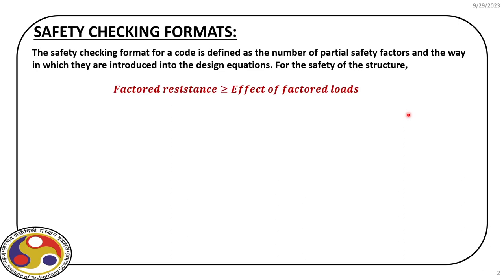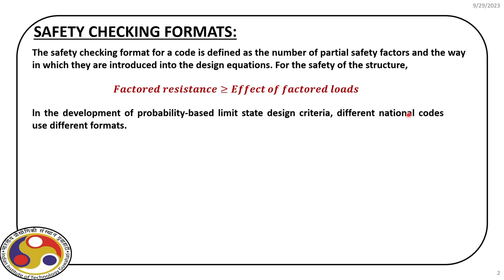So that is what we always have in the safety criteria: the factored resistance should always be more than the effect of the factored loads. Because we always overestimate loads, the factors associated with the loads are always more than one. Similarly, we always underestimate the resistance, so the factor associated with the resistance has to be less than one. Now in this process we again solve the limit state based on the given codal provisions, and for that we have different safety checking formats.